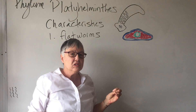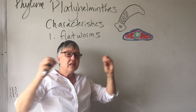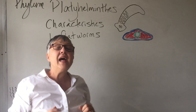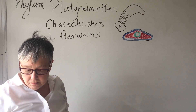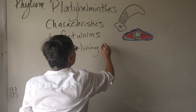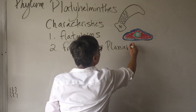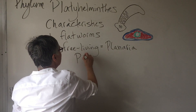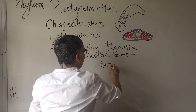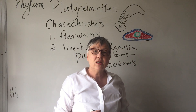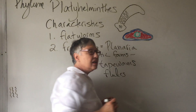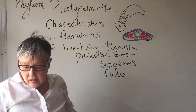There are a number of phyla that are worm-like in structure — long and thin, tapering at one or both ends. In this particular group, the body is flattened along one dimension. This group includes some free-living forms, such as the planarians, but also parasitic forms including tapeworms and flukes.